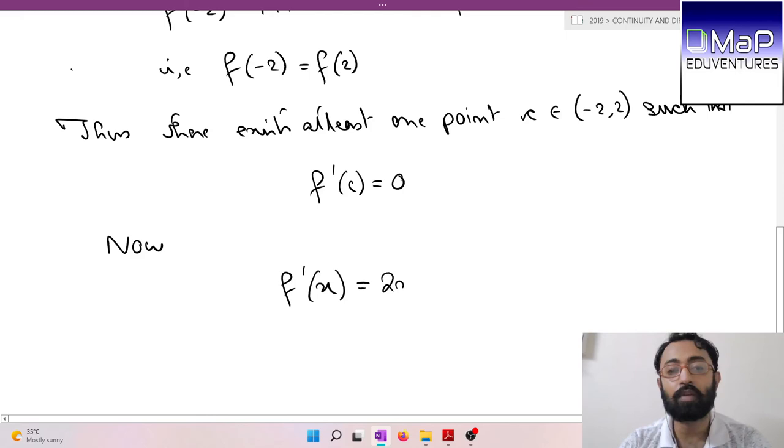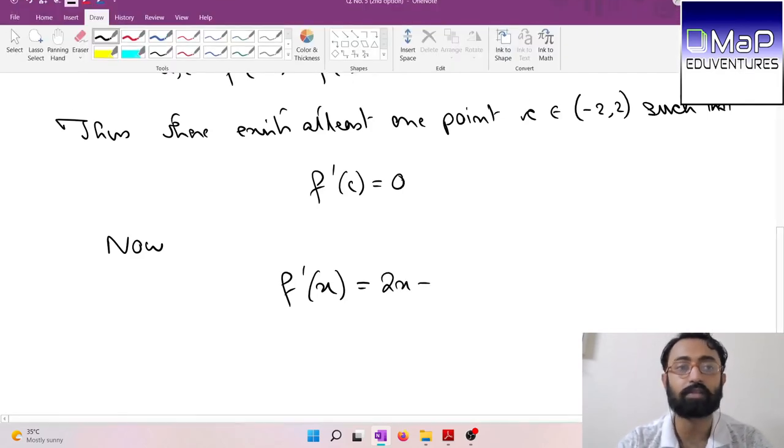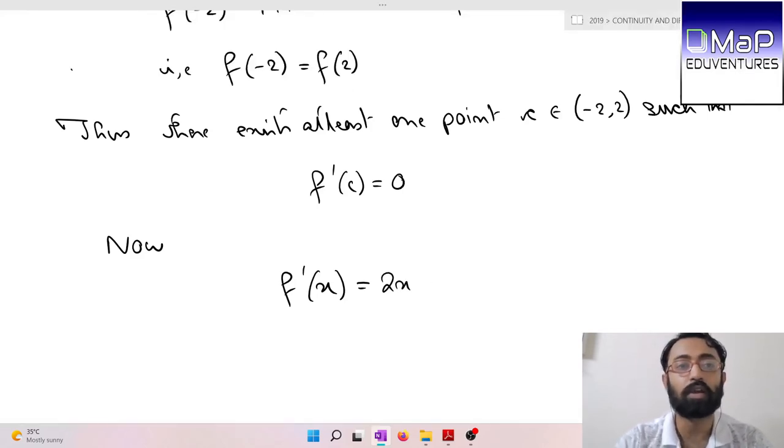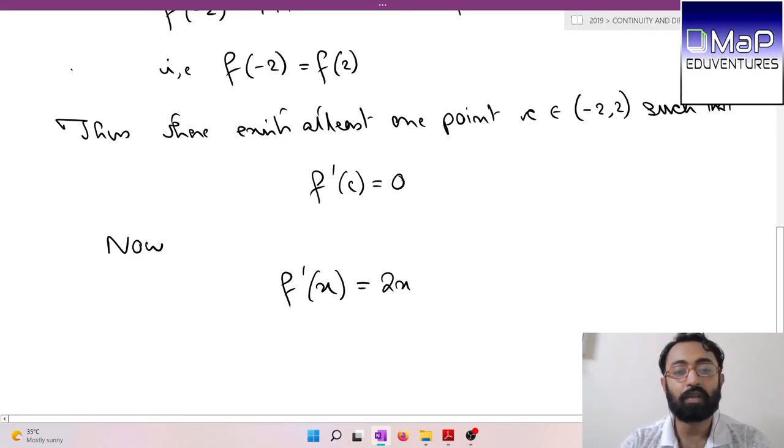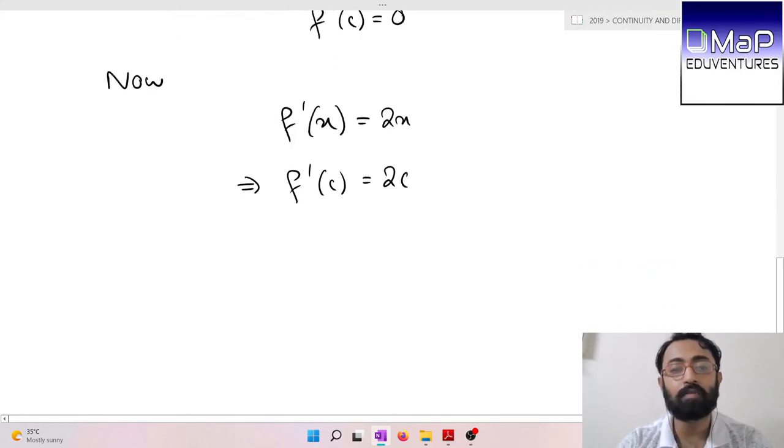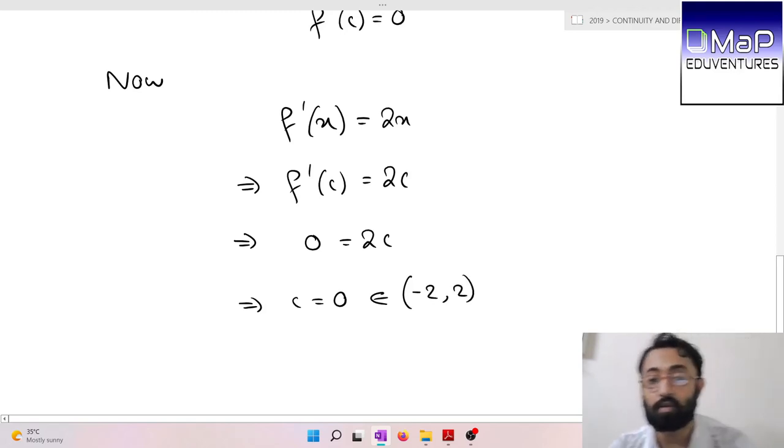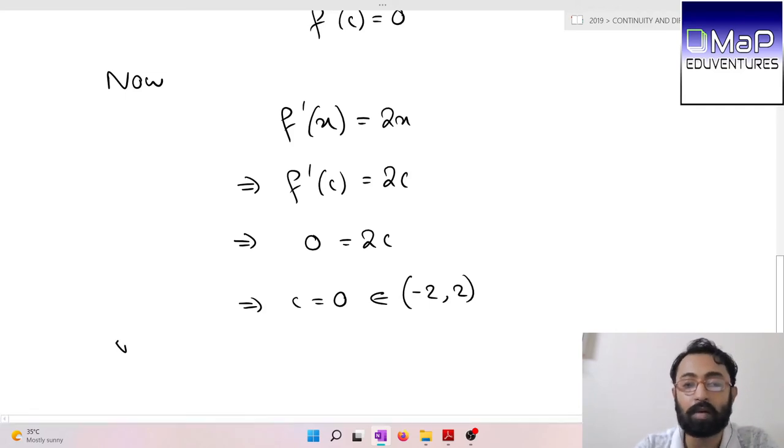So we can say that there exists at least one point c in the open interval (-2, 2) such that f'(c) = 0. Now f'(x) = 2x. So f'(c) = 2c. By the theorem, f'(c) = 0, so 2c = 0, which means c = 0. This point belongs to the interval (-2, 2). Thus Rolle's theorem is verified.